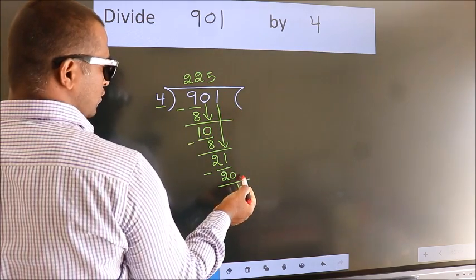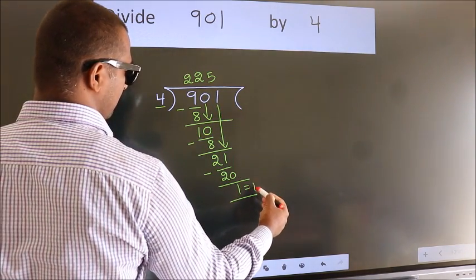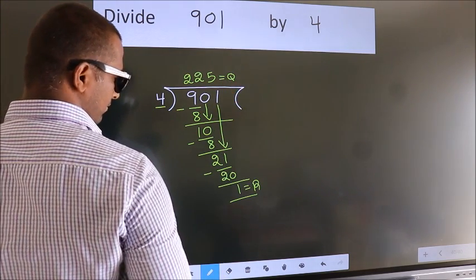No more numbers to bring it down. So, we stop here. This is our remainder. This is our quotient. Now, let's begin. We try!